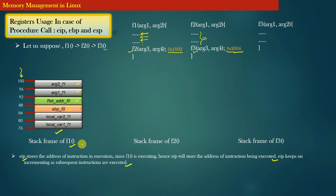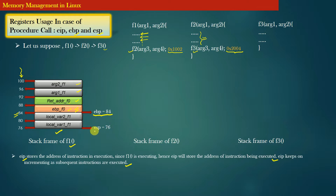Now what about EBP and ESP? EBP is the register which stores the address within the current stack frame where the base pointer register value of the caller function was saved. In this diagram that saved value is at address 84, so when f1 is executing, EBP equals 84. ESP always points to the bottom of the stack memory — since f1's frame is the bottommost frame, ESP equals 76.